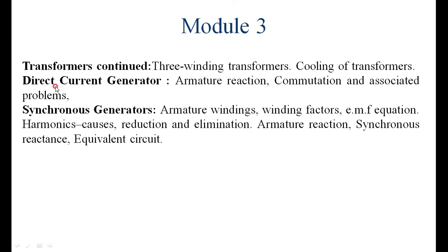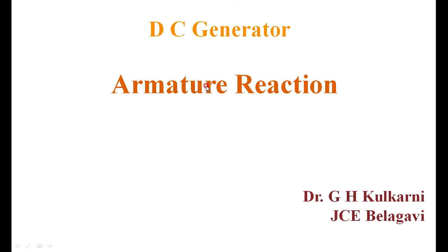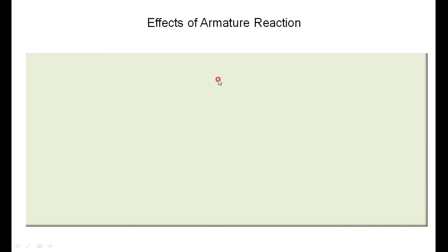We start with the DC generator armature reaction. We have armature reaction in the alternator as well, but here we look at the DC generator armature reaction. The armature reaction is nothing but the effect of the armature flux on the main flux — that is what we are calling armature reaction.